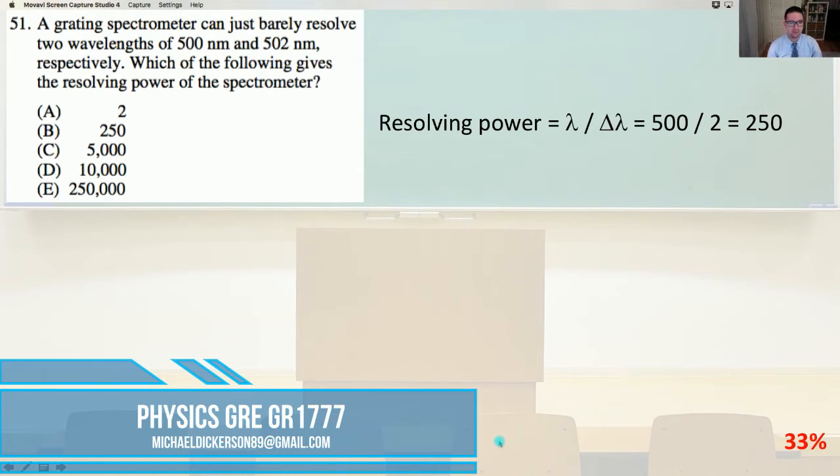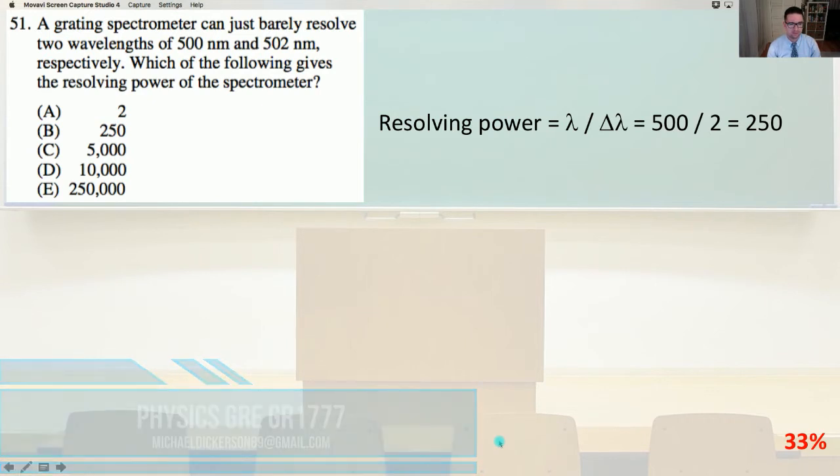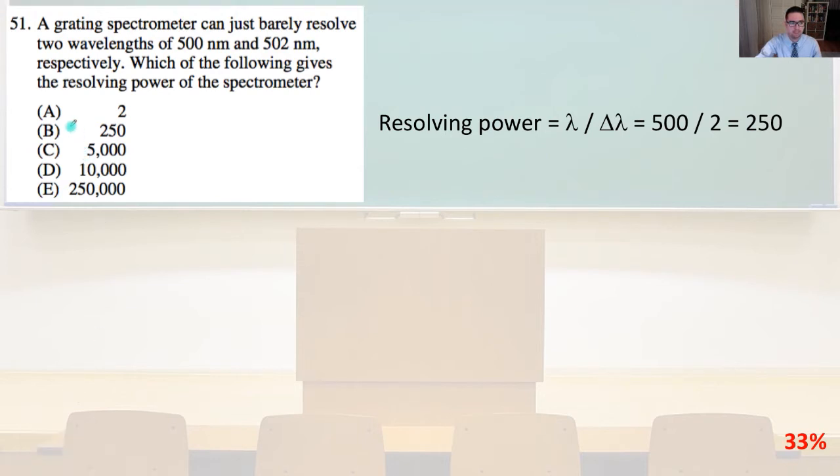A grading spectrometer can just barely resolve two wavelengths of 500 nanometers and 502 nanometers respectively. Which of the following gives the resolving power of the spectrometer? So our resolving power is going to equal lambda over our delta lambda. That's just going to equal 500 over 2 equals 250 and that is answer B.